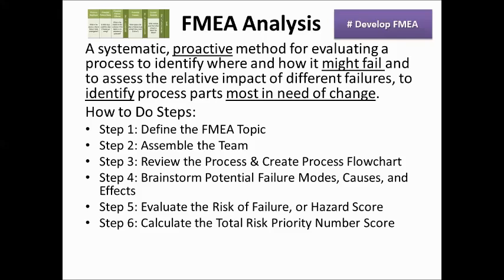ونحسب الـ hazard score بأن احنا بنضرب السكور بتاع الـ severity في الـ detection في الـ occurrence. وبعتنا لحضراتكو ازاي الجدول الممكن تحسب. أو حضرتك بتحط الـ rules اللي انت عايزها، so long as بتحط سكور من واحد لعشرة for the severity أو الـ detection أو الـ occurrence. بعد كده بتحسب total risk priority number for the process as a whole وتعرف منها what is the most important causes.